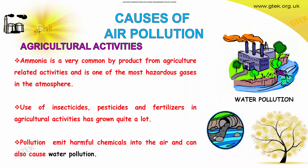Agriculture activities are also a cause of air pollution. Ammonia is one of the major by-products from agriculture-related activities and one of the most hazardous gases in the atmosphere. The usage of insecticides, pesticides, and fertilizers in agriculture has become predominant, as people use them for faster plant growth, emitting harmful chemicals into the air and also causing water pollution.